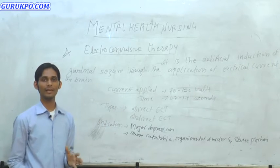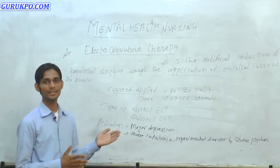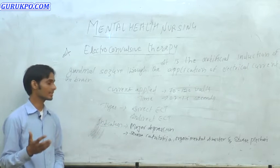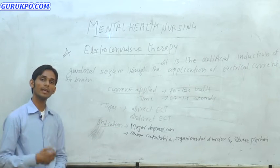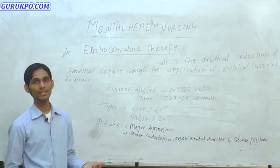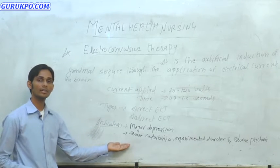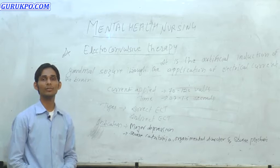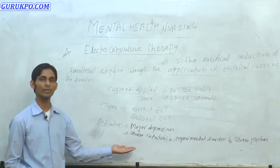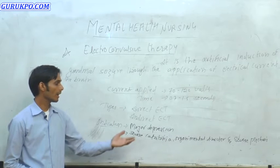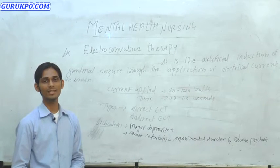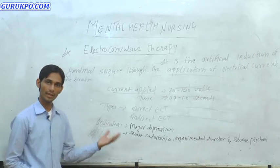In which conditions can we give ECT? These are called indications. The main indications include major depression — in case of major depression we can give ECT — and severe catatonia. In cases where a person is having catatonic stupor or excitement, we can give ECT.